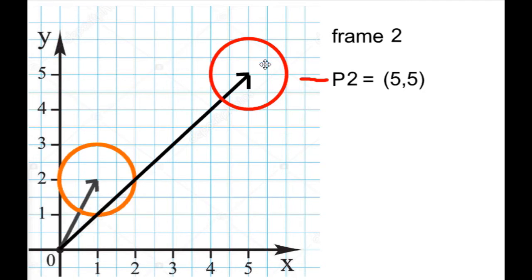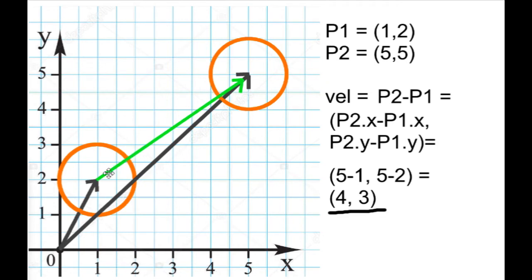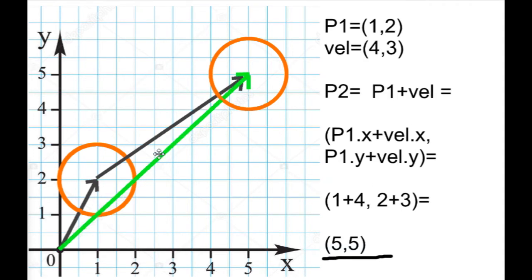And in the next frame, the ball is in the 5-5 position — that's also a position vector. And then the change of the ball's position, which is the green arrow, is the velocity vector. So first, if I have the first position vector and the velocity vector and I want to find the second position of the ball, what I do is just add those two vectors together. The way I do that is by adding the x components together and then the y components together.